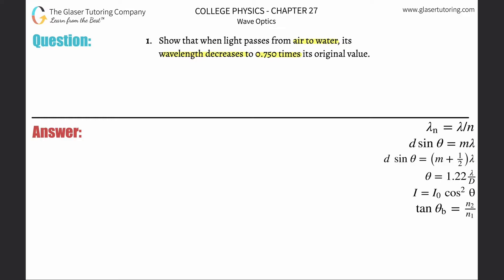Now we have a formula that relates how the wavelength changes to the index of refraction as we studied in chapter 25. It says that the wavelength in a new index of refraction will be equal to the wavelength in a vacuum divided by the index of refraction.